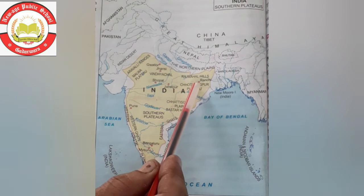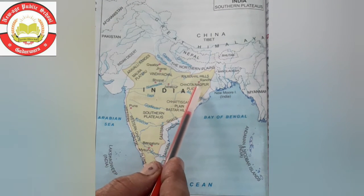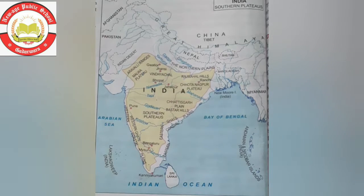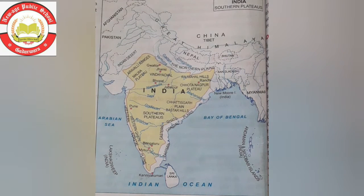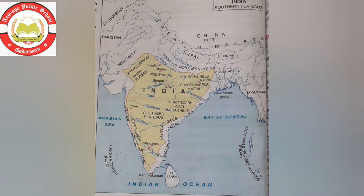The Chota Nagpur Plateau is in the north-east. The area is rich in minerals like coal, iron, manganese and mica. Chota Nagpur minerals are famous. Here are many minerals like coal, iron and manganese.